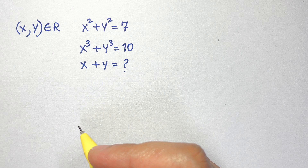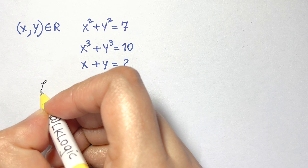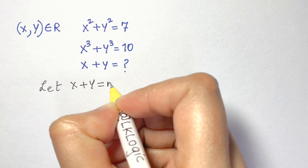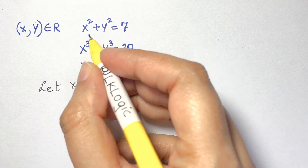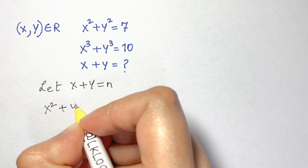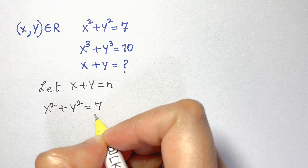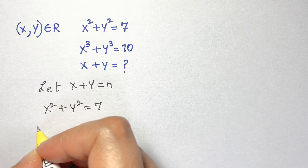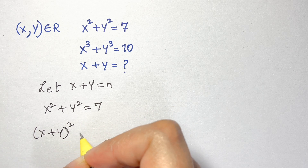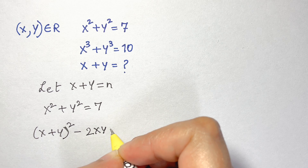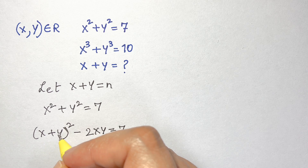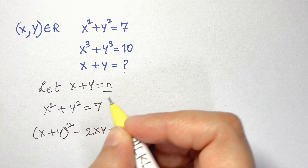We're going to let x plus y equal to n. Now, since x squared plus y squared equals 7, we know that x squared plus y squared is the same as x plus y the whole squared minus 2xy, which equals 7.